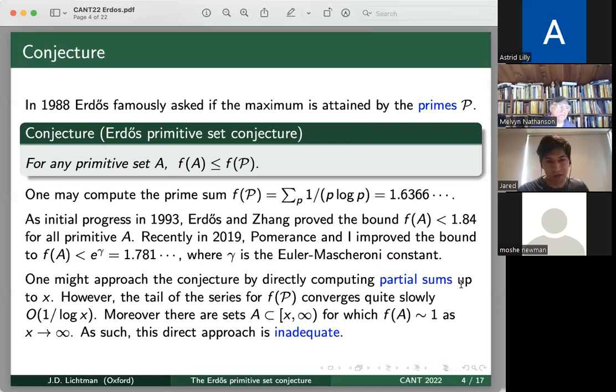So as some initial progress on this problem, in 1993, Erdős and Zhang proved the upper bound that f(A) is bounded by 1.84 for all primitive sets A. And more recently, Pomerantz and I had improved the bound to f(A) being at most e^γ, where γ is the Euler-Mascheroni constant.